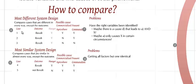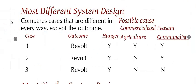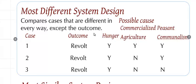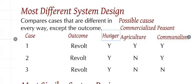If we start with the most different system design, what we do is compare cases that are different in every single way except the outcome. If we look at this table I've built here, I have three different possible causes for the outcome of revolt: hunger, commercialized agriculture, or peasant communalism. We have three different cases. What we can see here is that the outcome is the same in all three cases. But there are variables that are not identical in the three cases. In all of these cases you can see that there is one thing in common and it's hunger. The other two variables vary across the different cases.